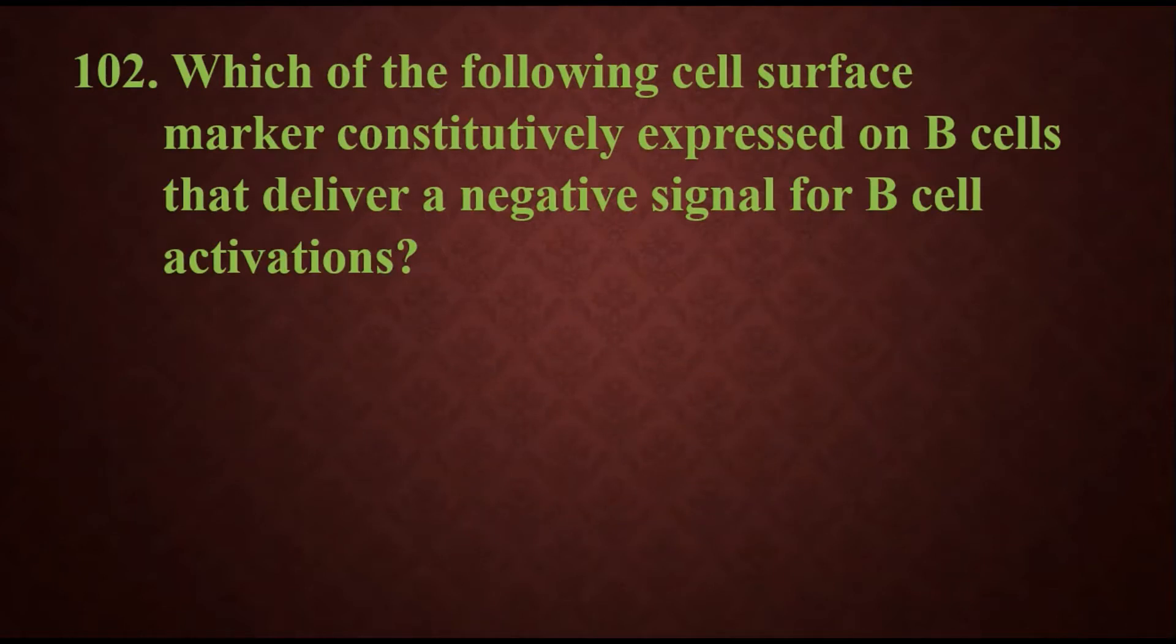Question 102: Which of the following cell surface markers constitutively expressed on B cells delivers a negative signal for B cell activation? Options are CD22, CD40, immunoglobulin alpha, or immunoglobulin beta. CD means cluster differentiation. The answer is CD22, the cell surface marker constantly expressed on B cells that delivers a negative signal for B cell activation.